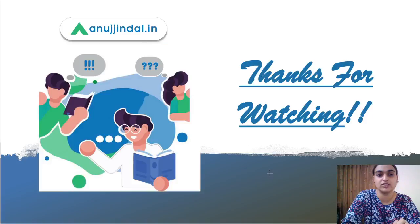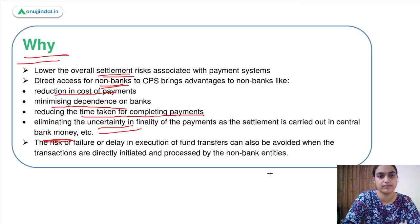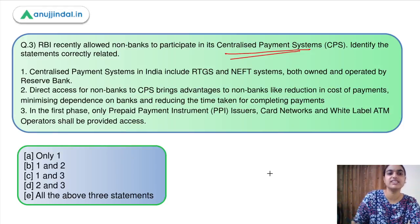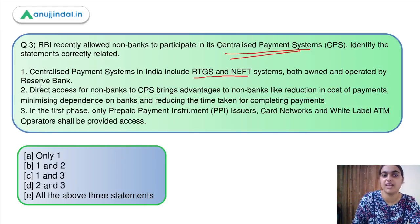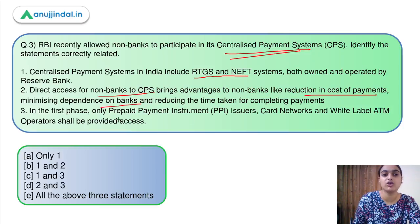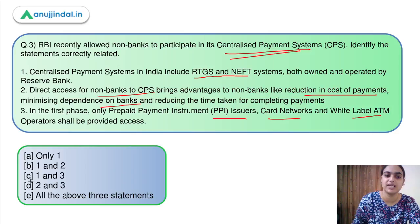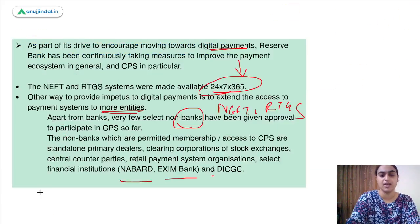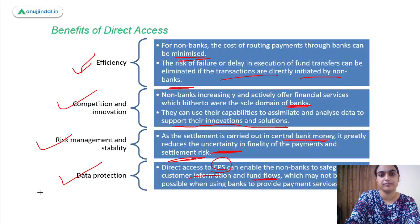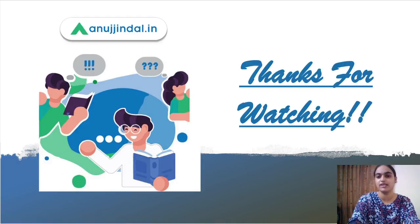Moving back to question 3: Statement 1 is correct — RTGS and NEFT are centralized payment systems. Statement 2 is also correct — direct access for non-banks offers benefits like low cost of payment and reduced dependence. Statement 3 is also correct — in the first phase only PPI issuers, white label ATM operators, and card networks will be provided access. Since all statements are correct, the answer is option E. This was all for today's session. I hope you found the session useful. Thank you so much.